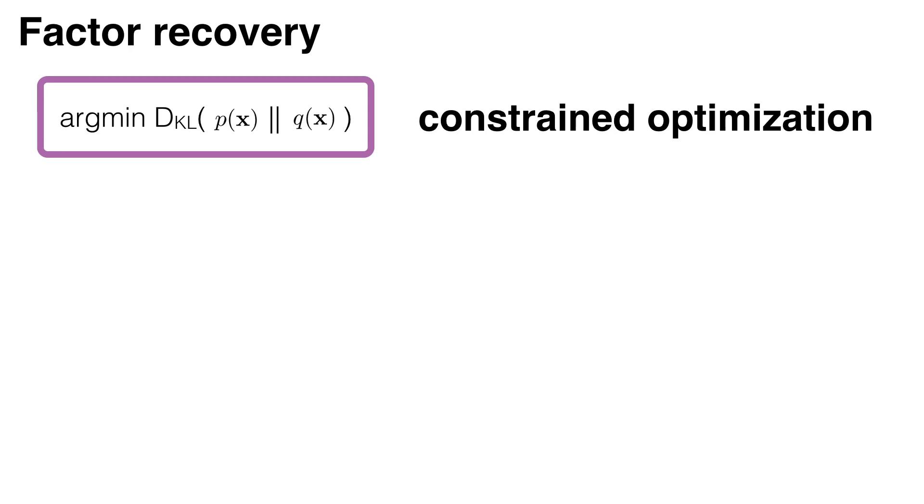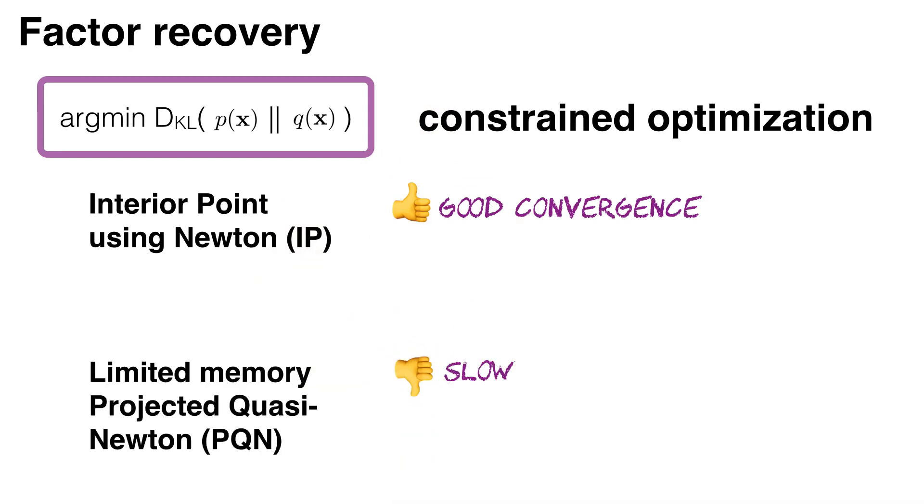Two main alternatives are proposed in the state of the art to solve it: interior point, which has good convergence, and projected quasi-Newton, which is very slow. However, both require tuning of several parameters that are problem-dependent.